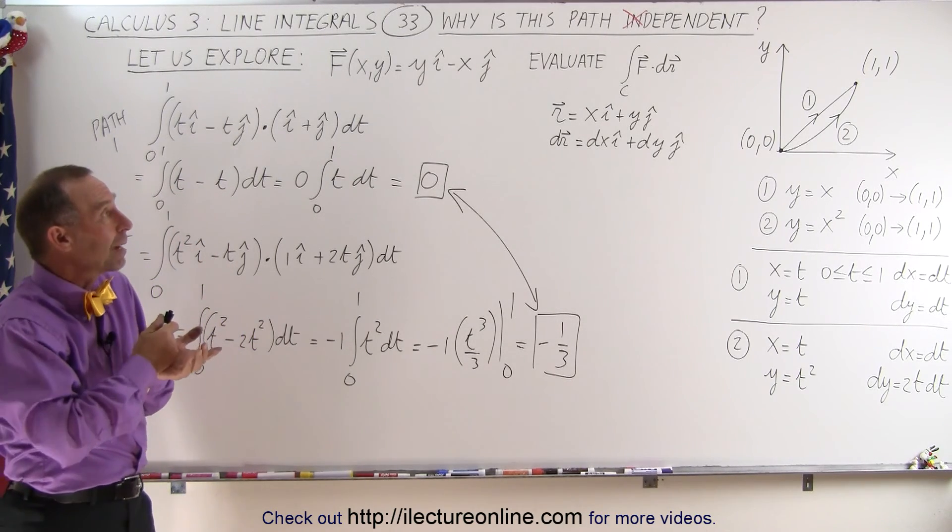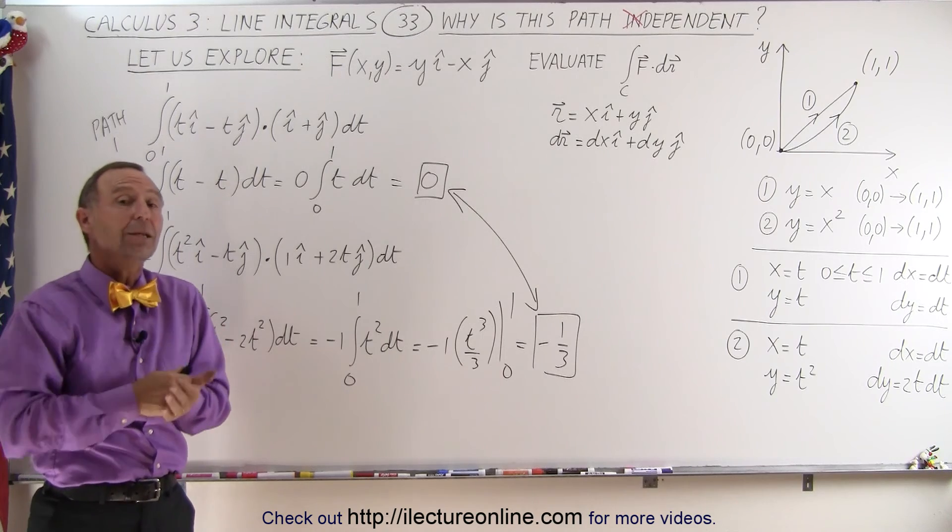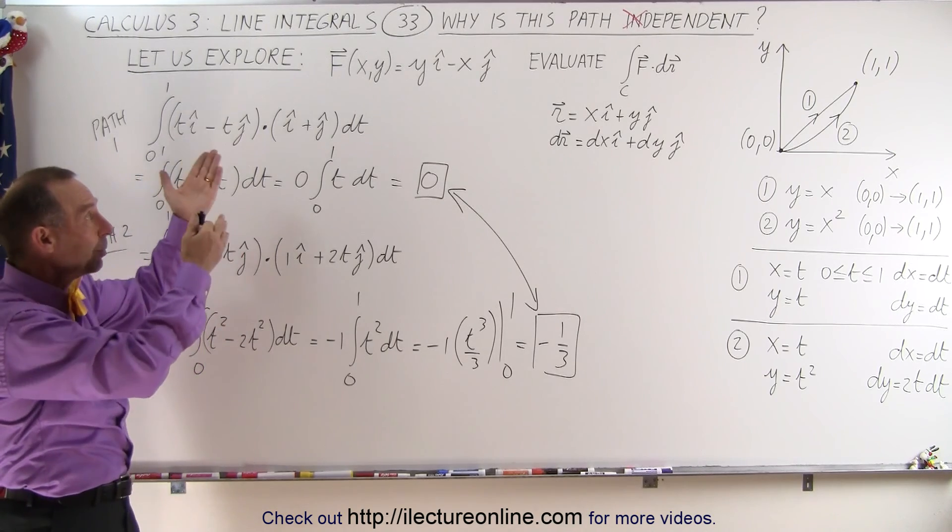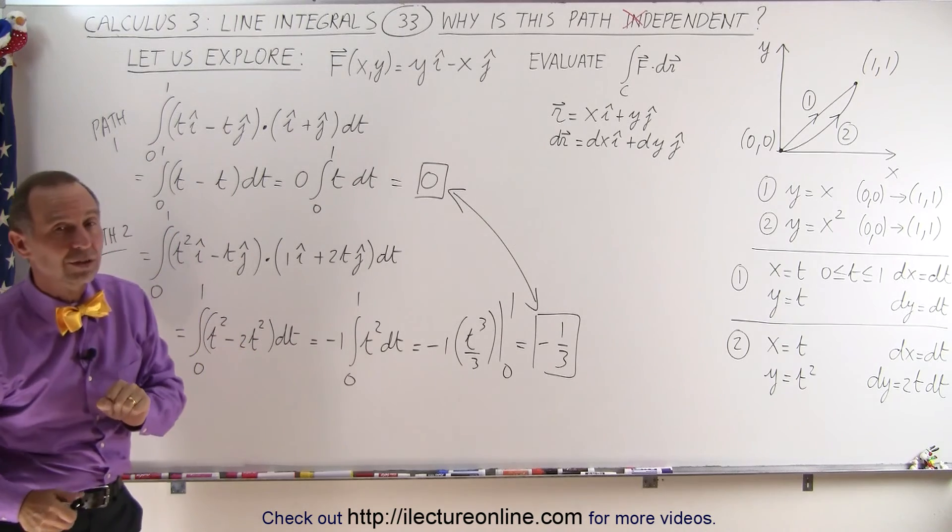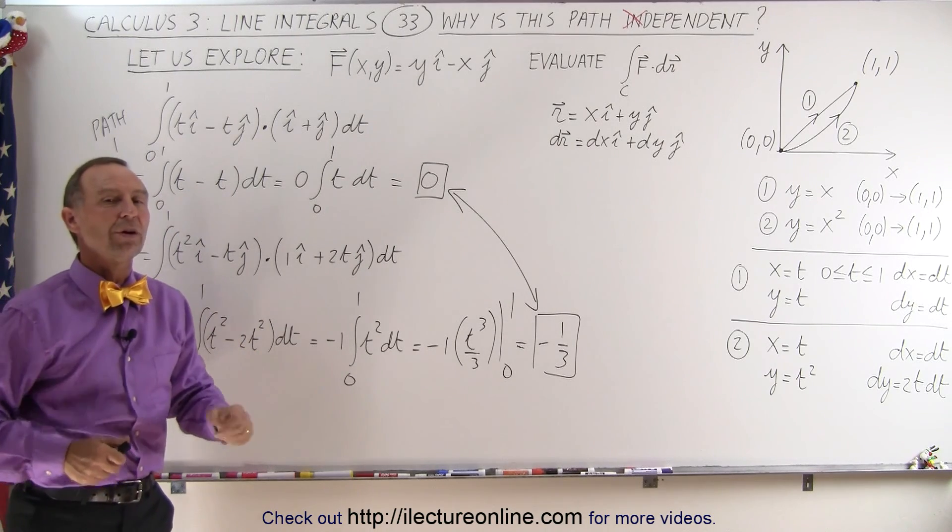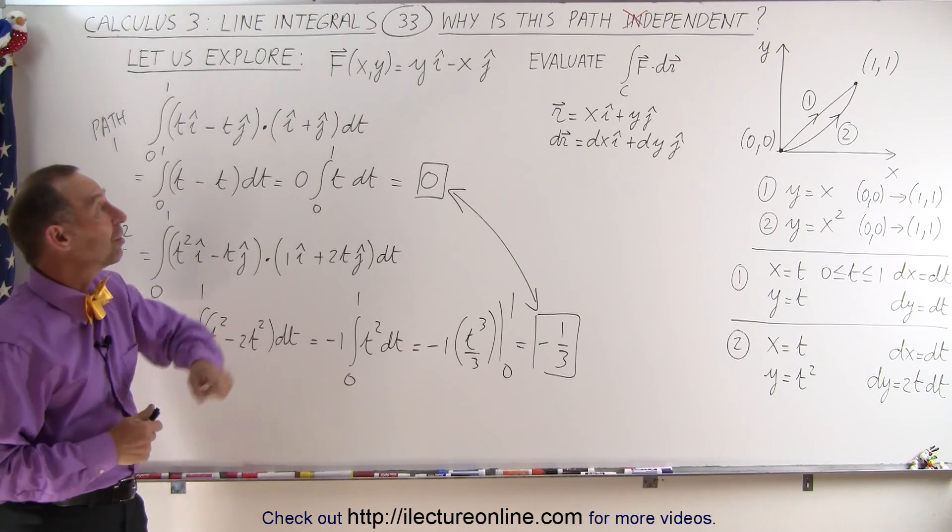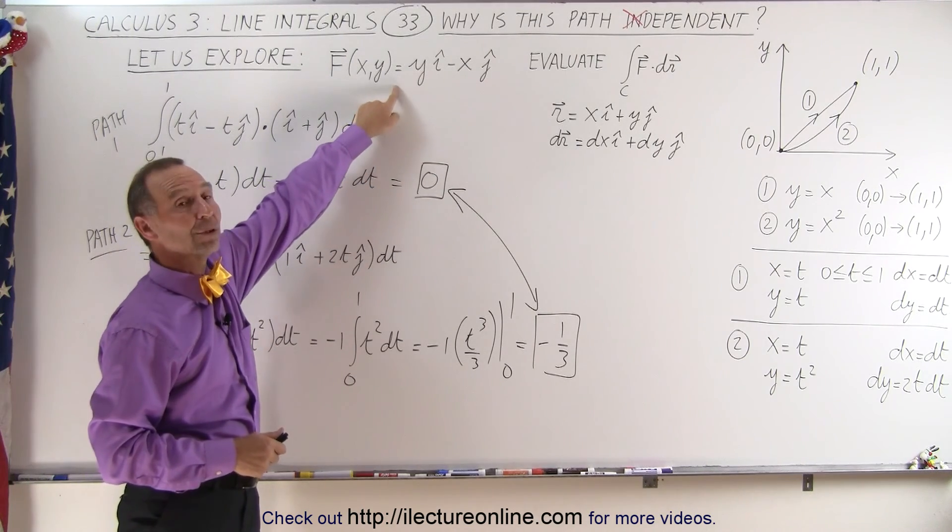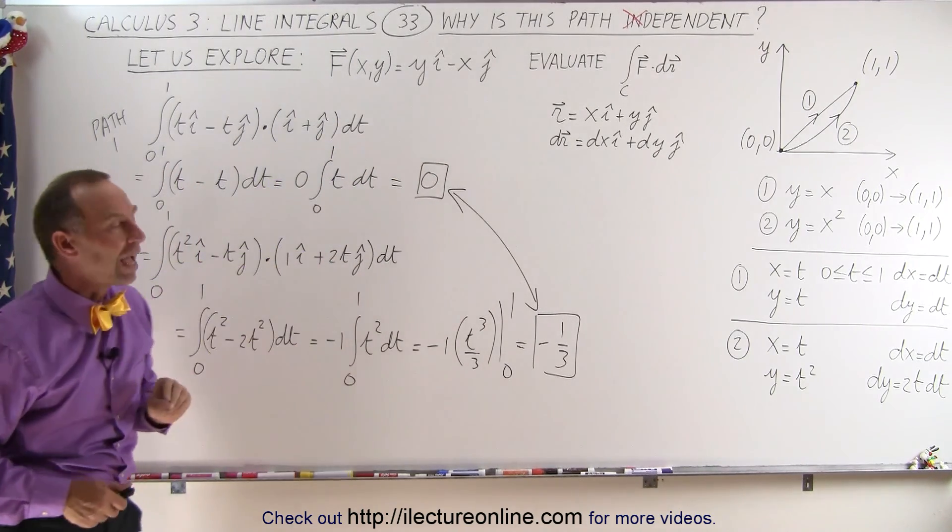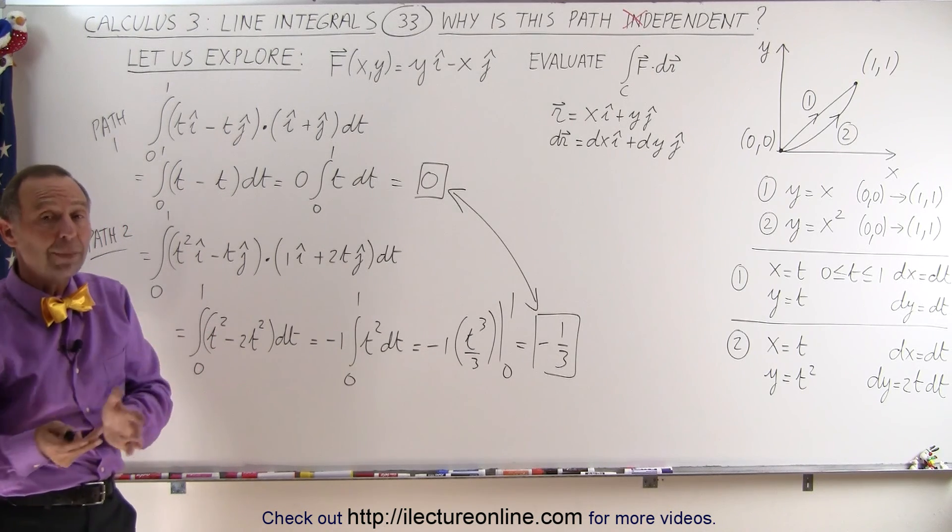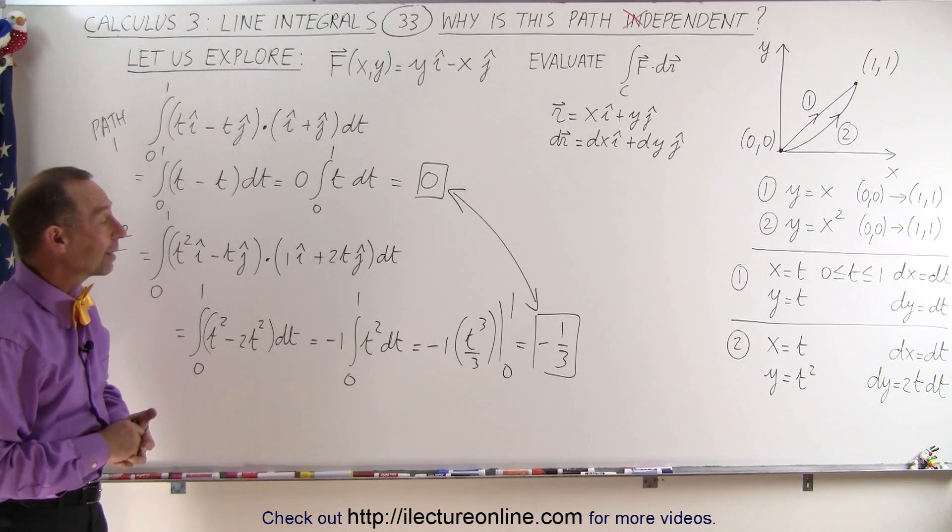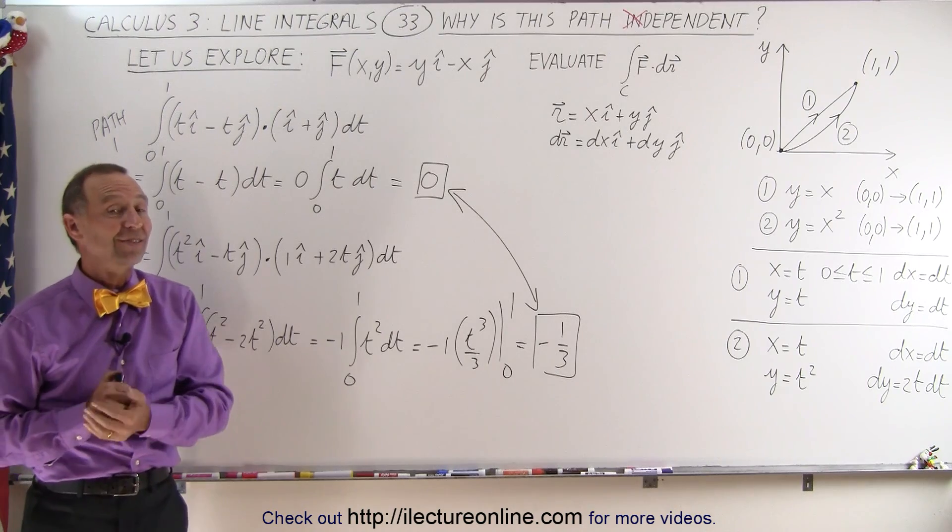At least now we understand what we mean by path dependent and path independent, and we can see there's examples where it seems to have something to do with the vector field. Now let's go explore some more and really get to the bottom of what we mean by path dependence and independence in terms of what does it mean for the vector field, what do we have to have there in order to have either the dependence or independence of the path. And that's how we figure these things out.